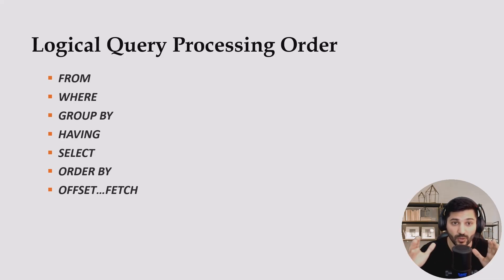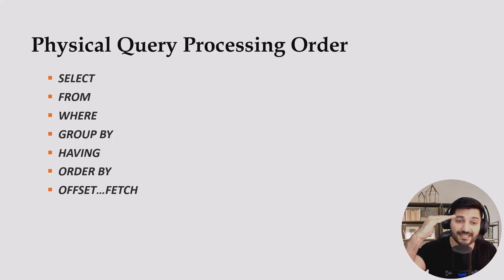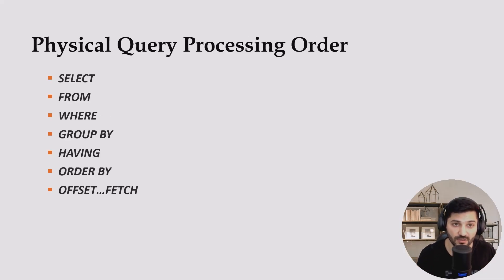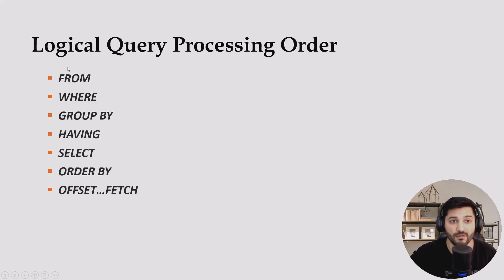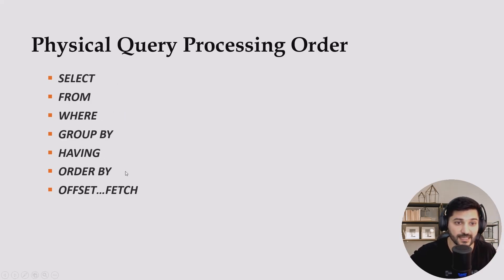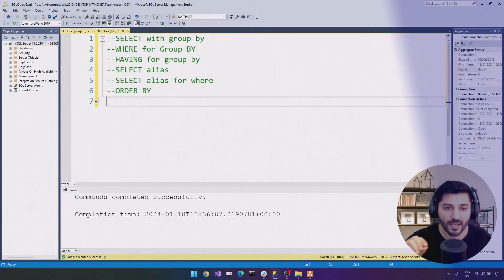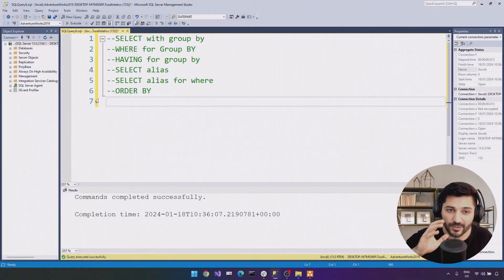You write the query in physical query processing order: SELECT, FROM, WHERE, GROUP BY, HAVING, SELECT, ORDER BY, OFFSET FETCH. You can remember the difference like this — just take SELECT from the front and move it after FROM to get the logical processing order. I think there is enough theory, so let's learn everything in practice.